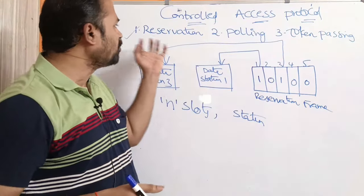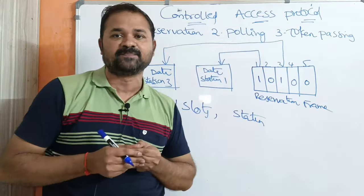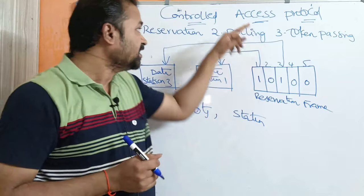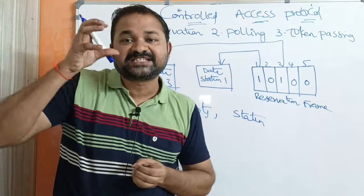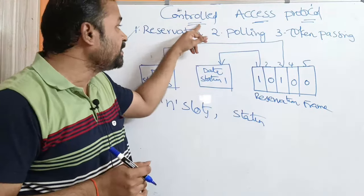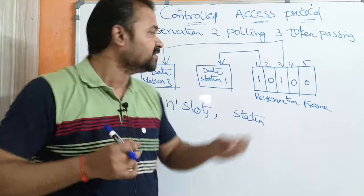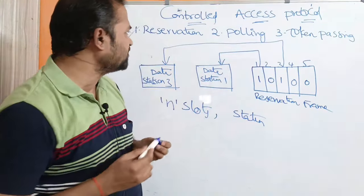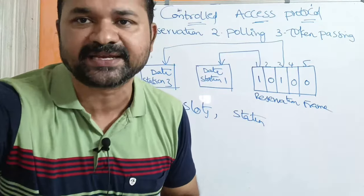This is about reservation. Why is it called a controlled access protocol? The name itself specifies the meaning — which station transmits the frame should be controlled and decided based upon these three techniques. In the next video we will see the second technique, that is the polling technique.